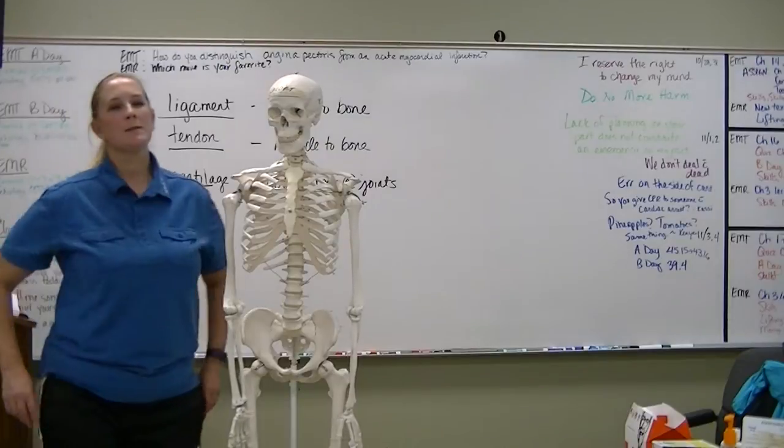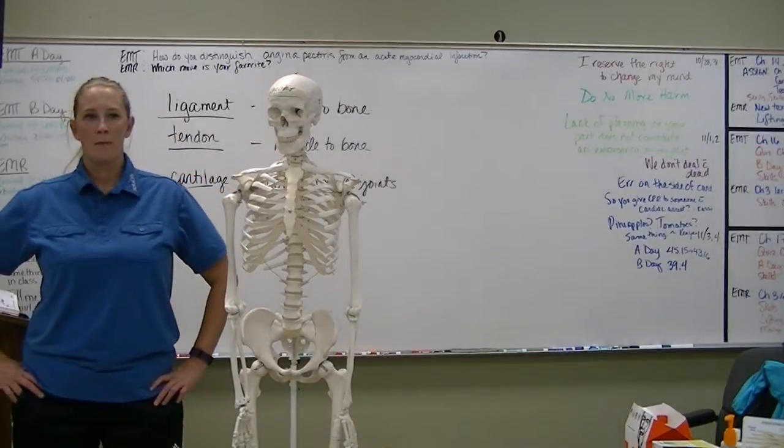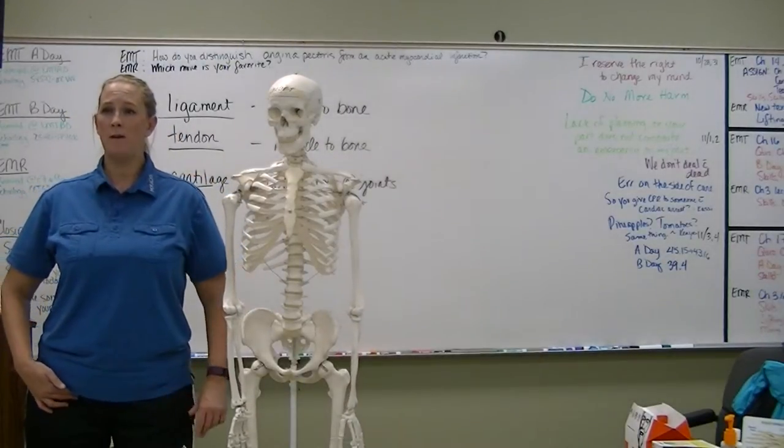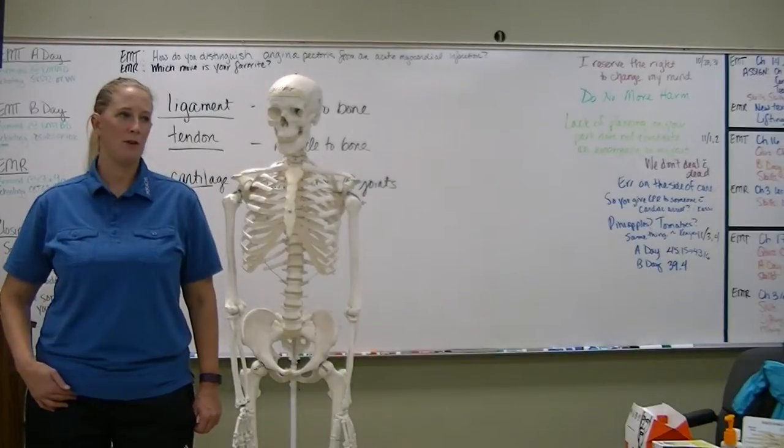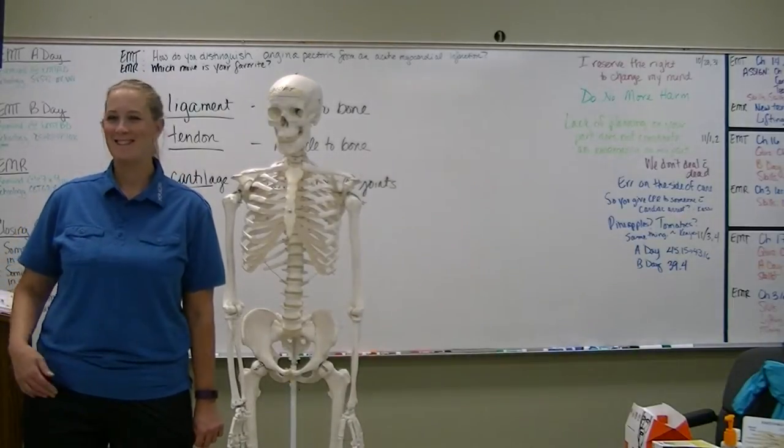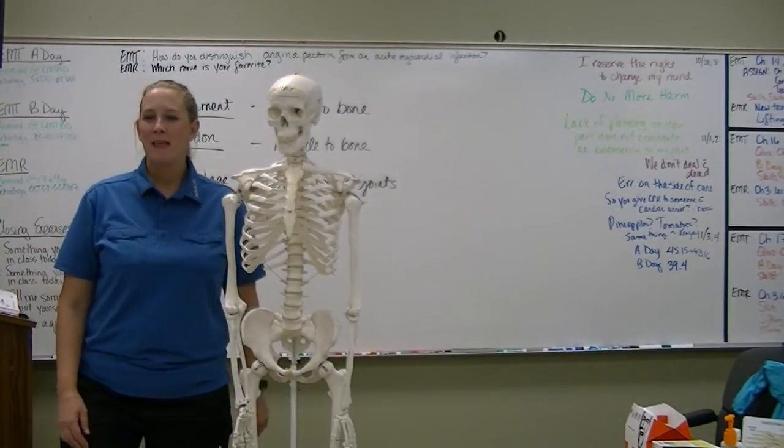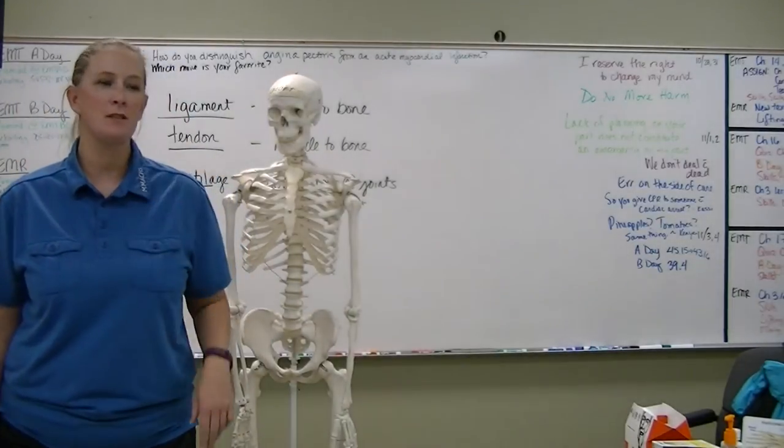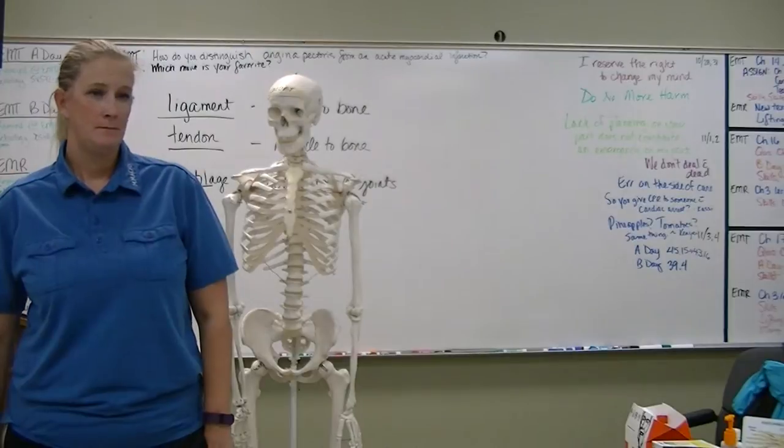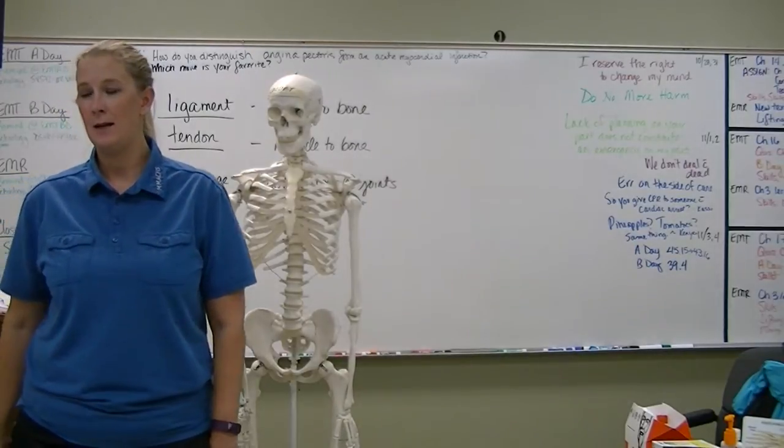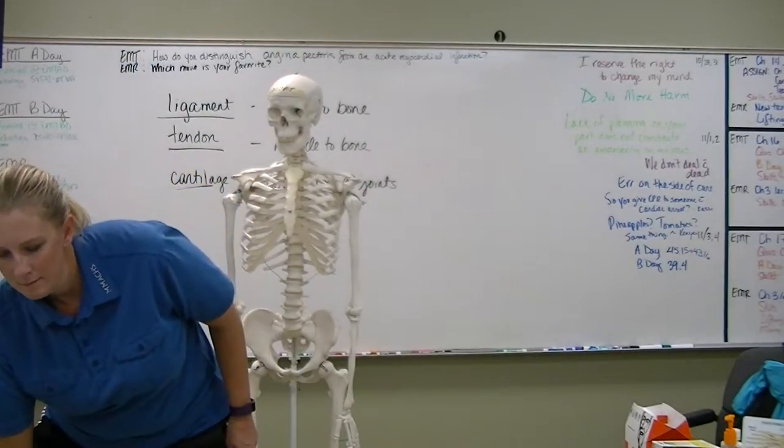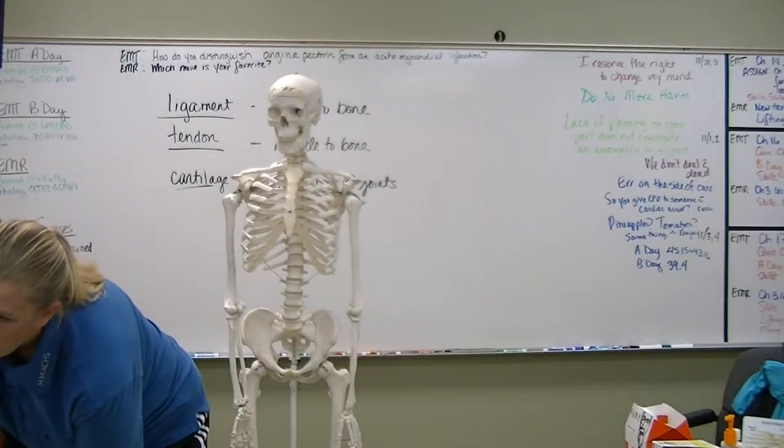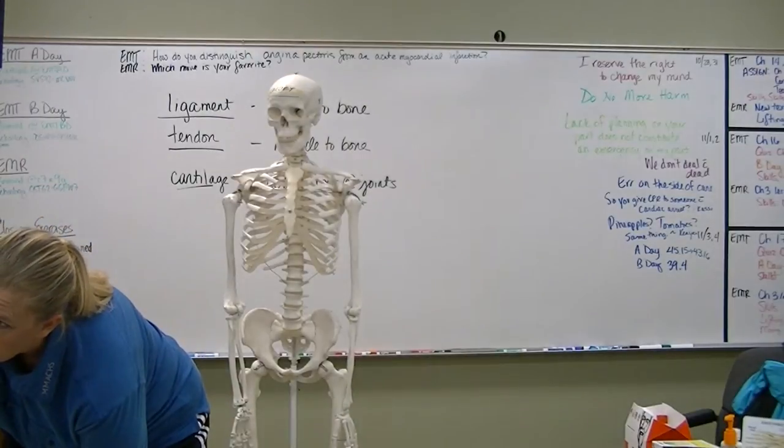Where's another place that we have a pulse point? In your groin. In your femoral. I'm not going to make you find that on your neighbor. Come here, Dusty. How about your posterior tibial? Actually, let's start with popliteal. Where's your popliteal pulse? Behind the knee.